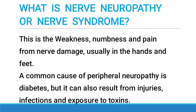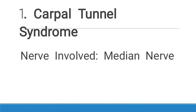First, what is nerve neuropathy or nerve syndrome? This is the weakness, numbness, and pain from nerve damage, usually in the hands and feet. A common cause of peripheral neuropathy is diabetes, but it can also result from injuries, infection, and exposure to toxins. In summary, nerve neuropathy or nerve syndrome involves a medical condition whereby there is damage or a lesion to a nerve.